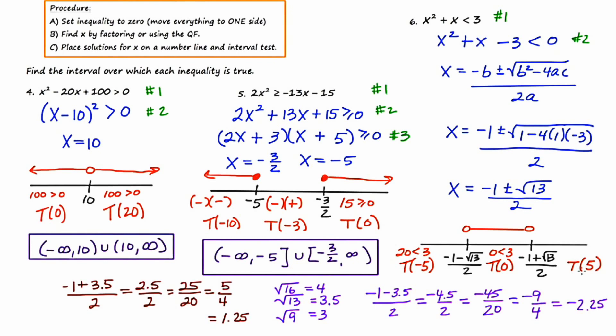If I go to the rightmost region and plug in 5, I get 25 plus 5, which is 30. Is 30 less than 3? The answer is still no. So the winning region is going to be all those things between negative 1 minus root 13 over 2 and negative 1 plus root 13 over 2. So I'm running out of space a little bit, but I'm going to put the solution set for this one up here at the top where I've got a little bit more room.